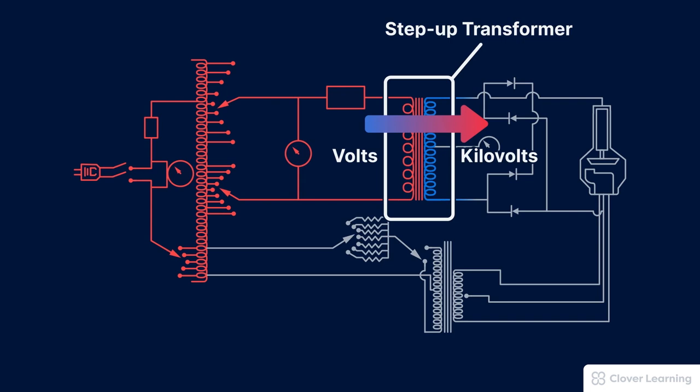A step-up transformer uses a process called mutual induction. And that makes sense too, because if you make a mutual decision with someone, that's a decision between two people. In this case, mutual induction is made by a set of two coils of wire, the red coil and the blue coil.